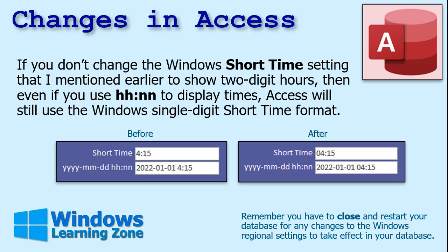Here's the thing with that short time setting I mentioned — why I'm switching to the two-digit hour. If you don't change the Windows short time setting to show two-digit hours, then even if you use the hh:nn format to display times in Access, Access will still use the Windows single-digit short time format. Even if you specify hh:nn as the format, Access will still convert that to short time and use one digit for the hour — I personally think that's a bug. So you have to make the changes at the Windows level to get the two-digit hours. That's why I like to do that — I want all my times to line up the same.